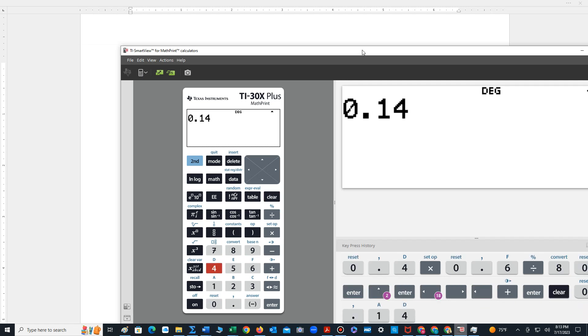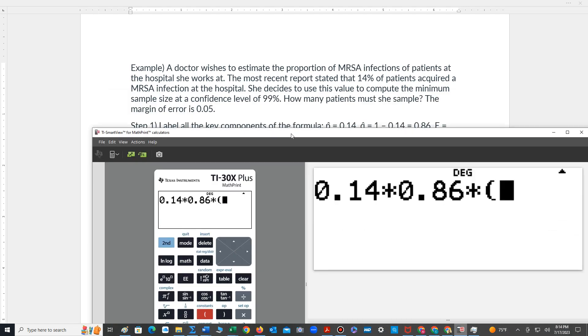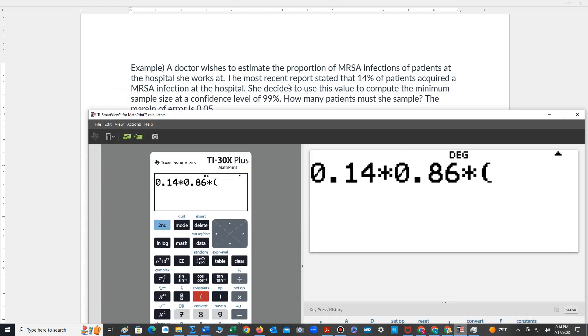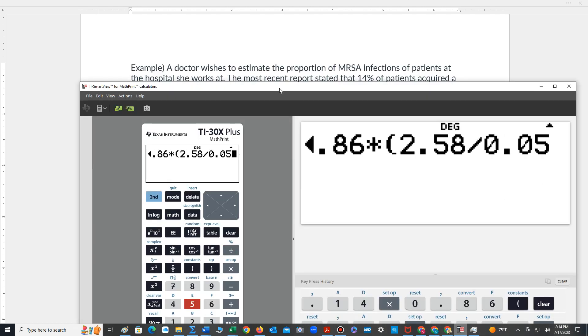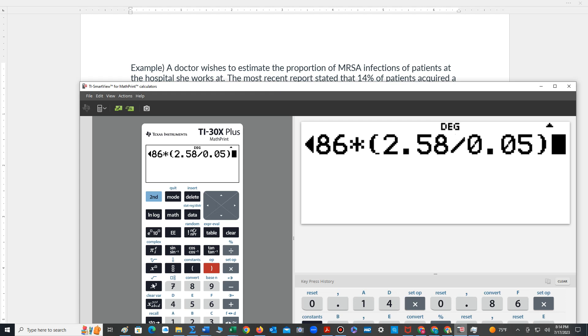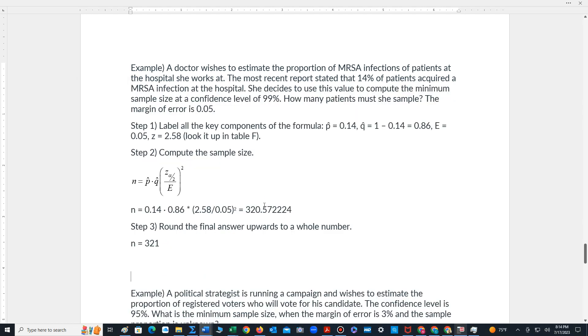So 0.14 times 0.86 times 2.58 divided by 0.05 and then quantity squared. So that's 320.57. Remember we always round up to 321. So that's the minimum sample size.